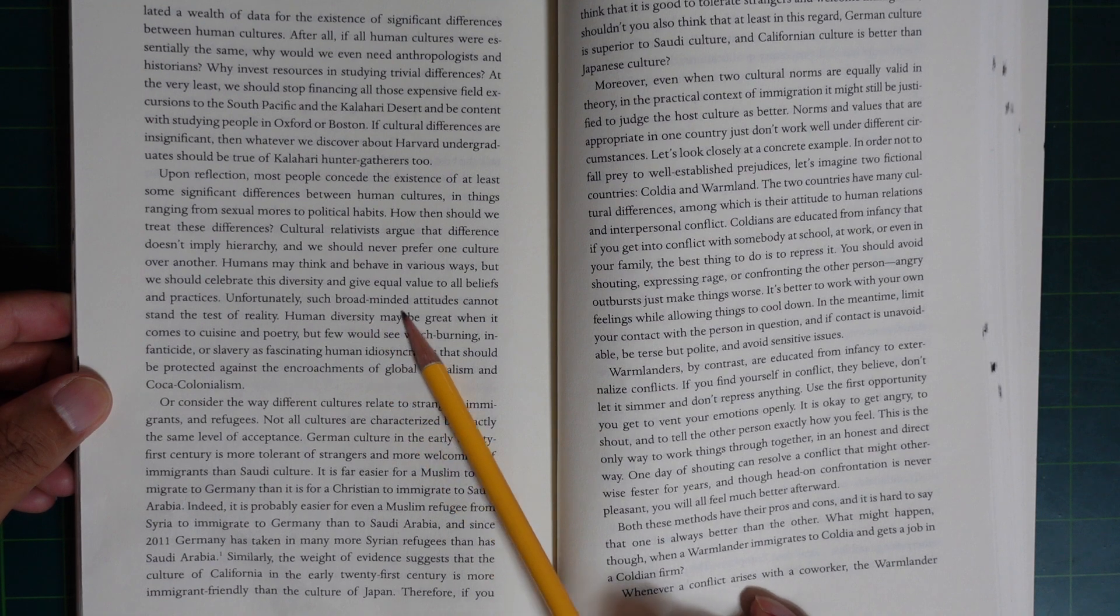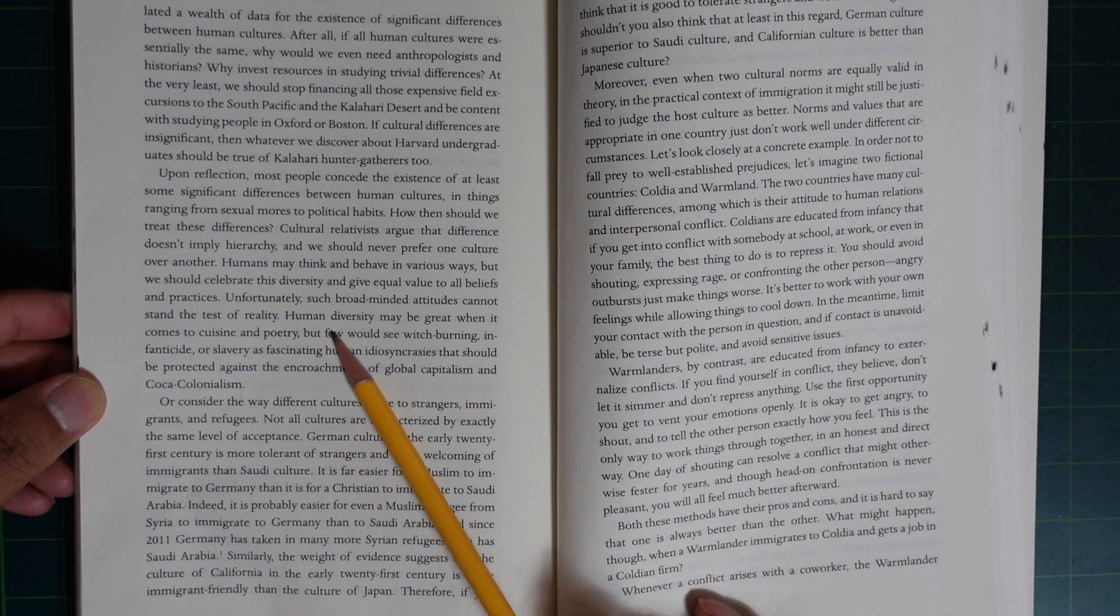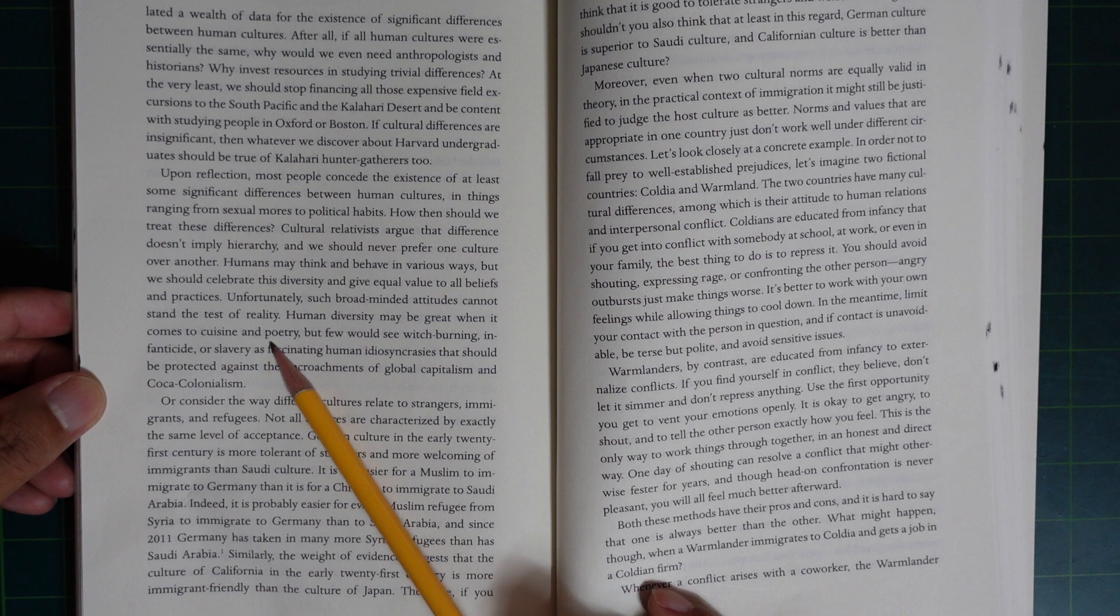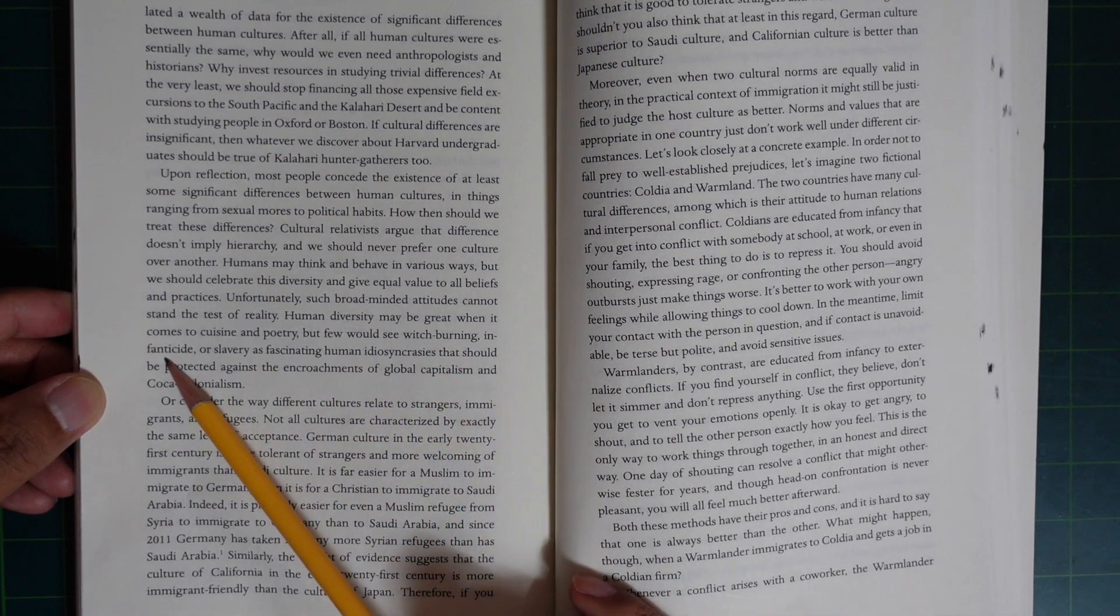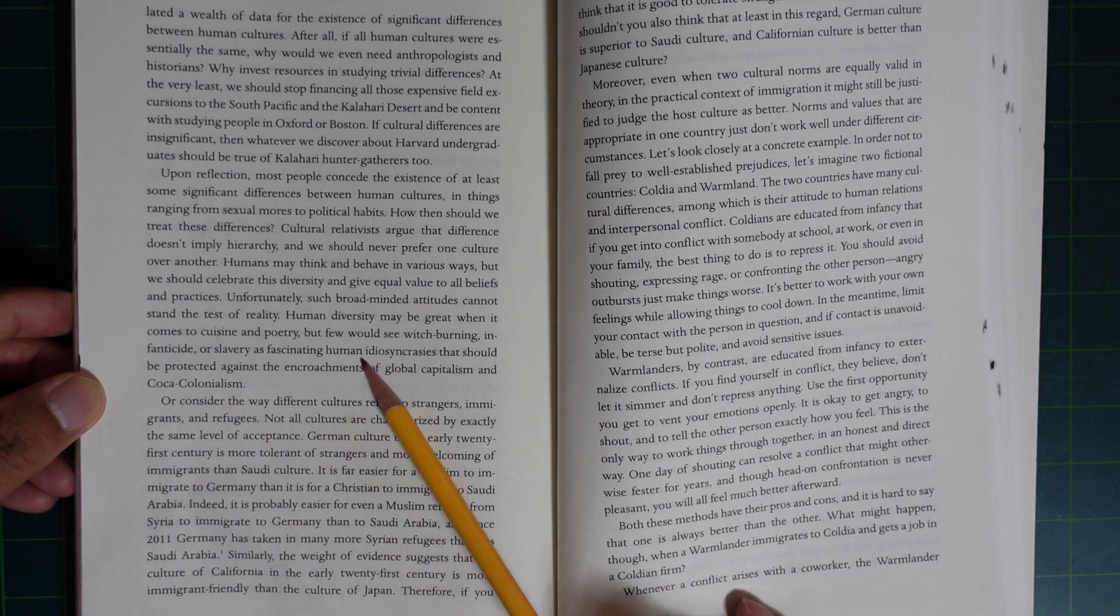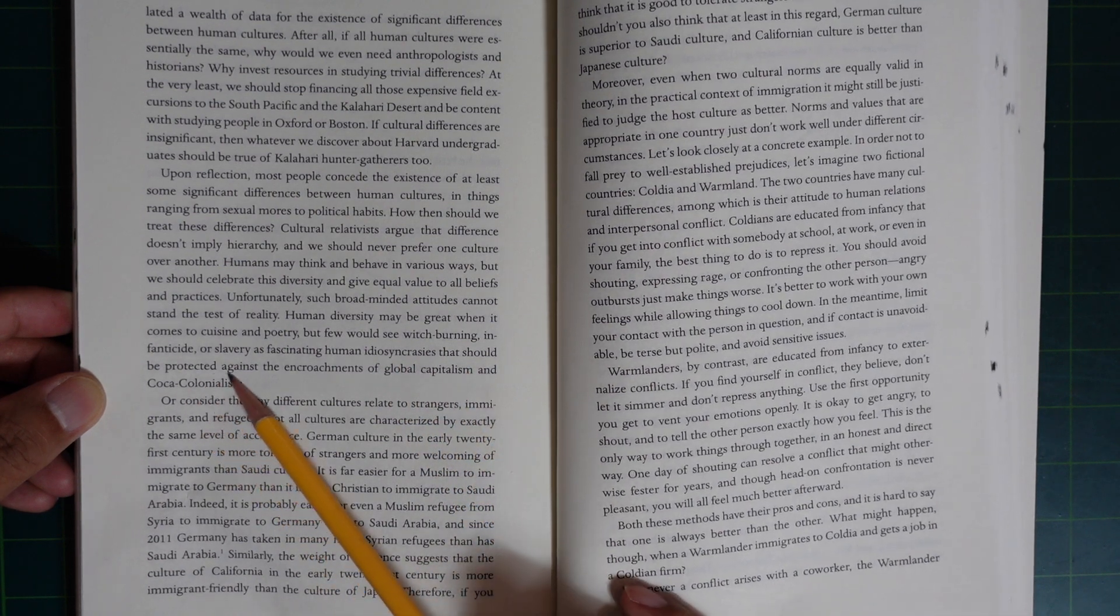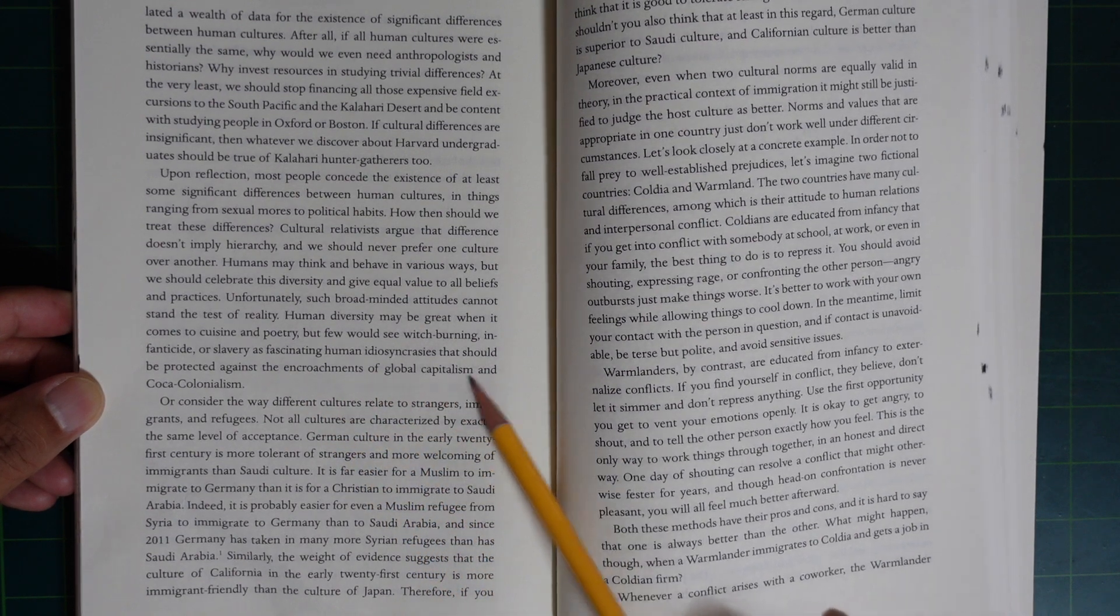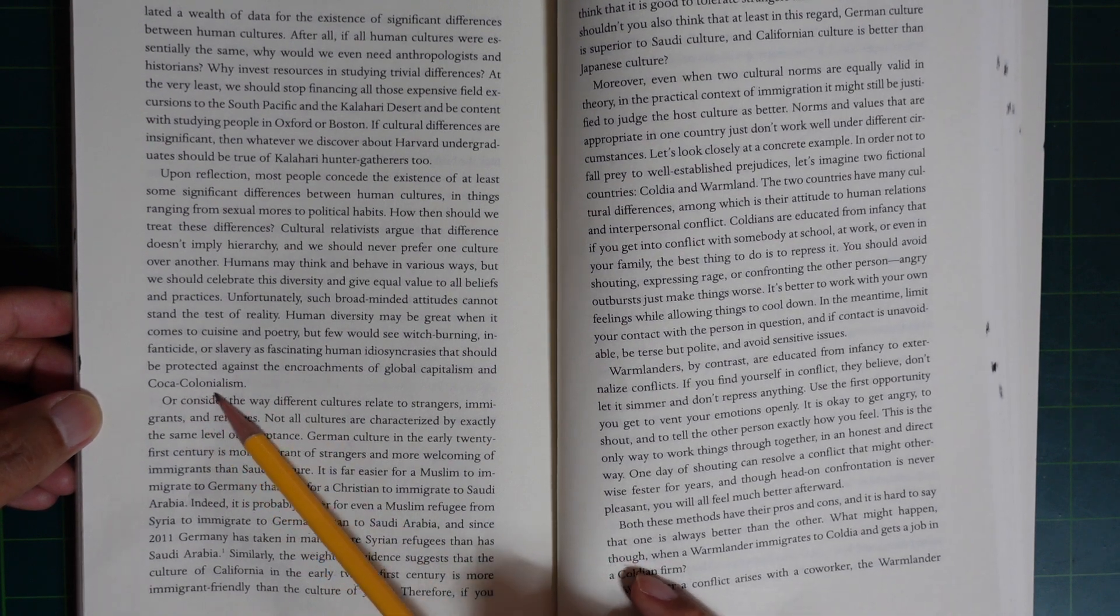Unfortunately, such broad-minded attitudes cannot stand the test of reality. Human diversity may be great when it comes to courage and poetry, but few would see witch burning, infanticide, or slavery as fascinating human idiosyncrasies that should be protected against the encroachment of global capitalism and coca-colonialism.